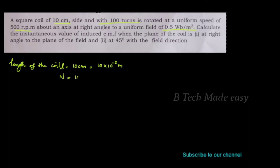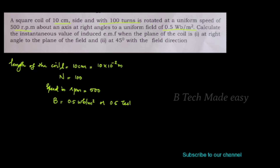Number of turns N = 100. Speed in RPM = 500. Flux density B = 0.5 Weber per metre squared, which equals 0.5 Tesla.